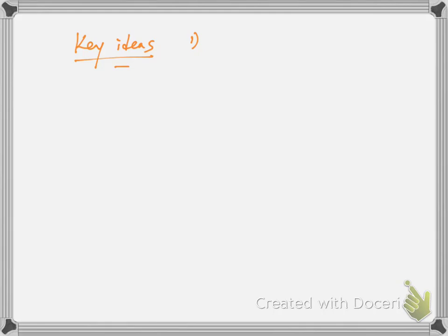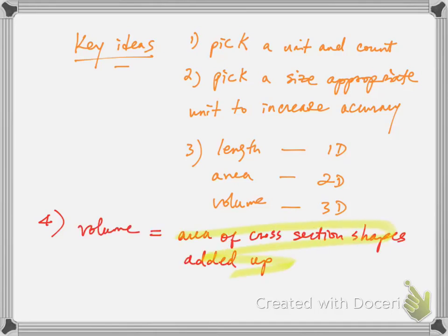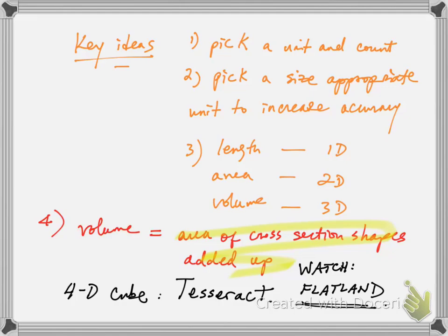In summary, the key concepts of this video include: first, regardless of what you're counting, just pick a counting unit and count how many there are, choosing a size-appropriate unit for the most accurate estimate. Second, length is the appropriate measuring unit for one-dimensional objects, area for two-dimensional objects, and volume for three-dimensional objects. Third, and most importantly, if you want to find the volume of a solid, start with the area of a familiar shape obtained by taking a cross-section, then count how many of those shapes there are — this gives you the volume and can be generalized to any dimension. If you're interested in four-dimensional objects, look up the word tesseract, and I encourage you to watch the movie Flatland.